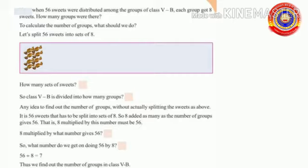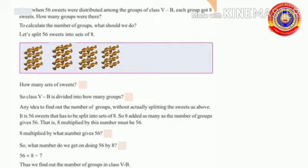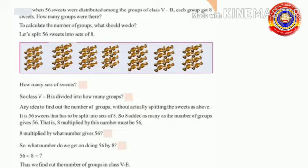Let's split 56 sweets into sets of eight. One eight is 8, two eights are 16, three eights are 24, four eights are 32, five eights are 40, six eights are 48, seven eights are 56. So how many sets is that? Yes, it is seven. So class 5B is divided into seven groups.